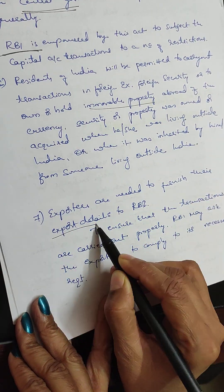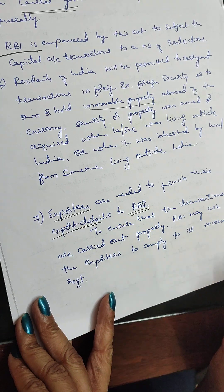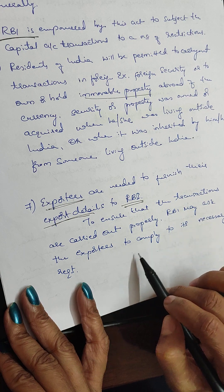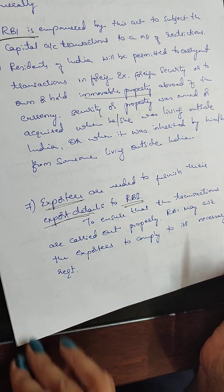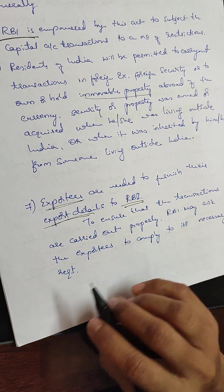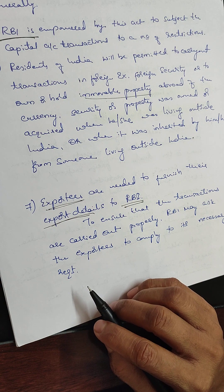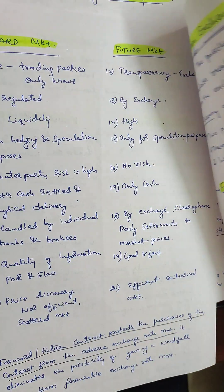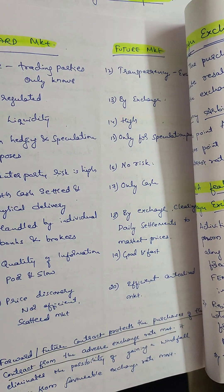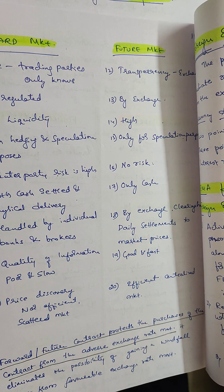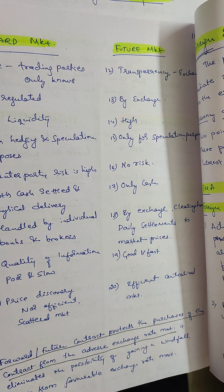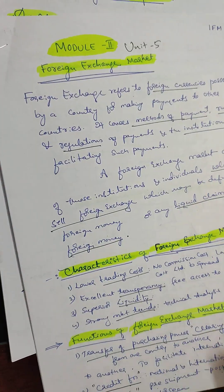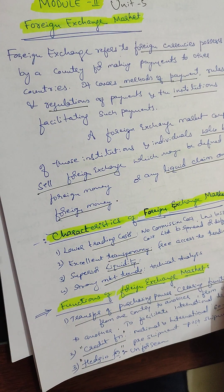Exporters are required to furnish their export details to RBI. To ensure that transactions are carried out properly, RBI may ask exporters to comply with its necessary requirements. The central government will have restrictions on current account-related deals and RBI restrictions. This completes the features of FEMA.